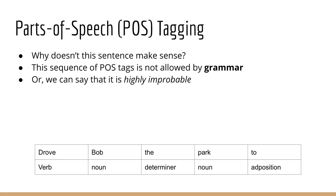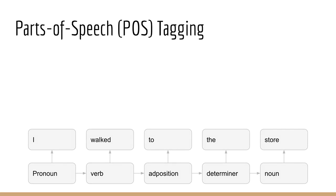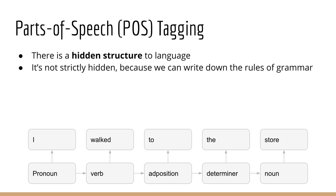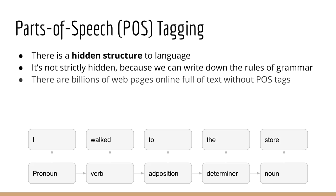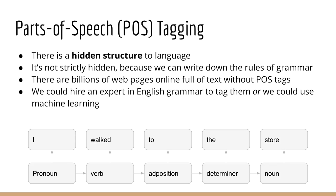For example, you can't switch around these words in any order you like. If you have the sentence 'drove Bob the park too,' such a sentence is incomprehensible because it does not follow the rules of grammar. What this means is that there is a hidden structure to language. It's not strictly hidden because we can write down the rules of grammar, but it's hidden in the sense that there are billions of web pages online full of text, and we don't have their parts of speech tags readily available. We could hire an expert to label them manually, or we could use a latent variable model such as an HMM to do the job for us.